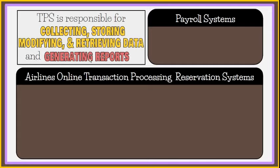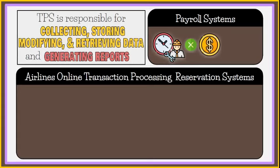The TPS generates detailed reports, lists, and summaries which are used by other levels of management. An example of TPS is a payroll system. The primary inputs are the number of employee hours worked during the week and the pay rate, while the primary output consists of paychecks. Payroll systems produce employee paychecks and related reports for management and documents required by government agencies.